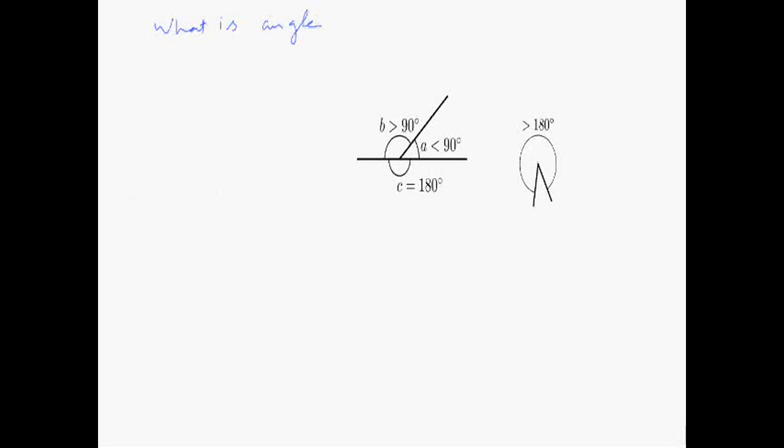An angle is the space between two lines whose starting point is one. Suppose this is an angle because there are two sides.